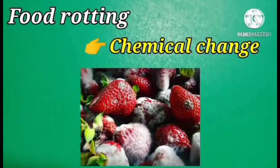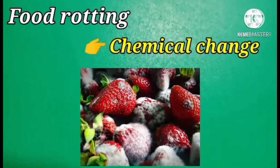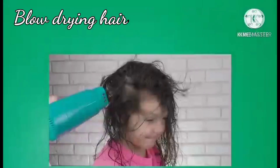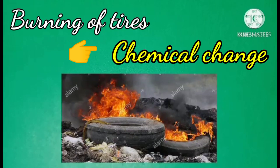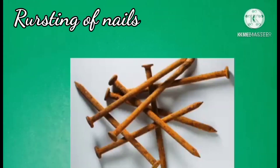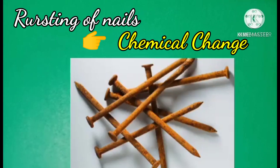This would be a chemical change because it's not reversible and involves changing the bonds of chemicals in the food. The change of color and odor is an indication of chemical change. Blow drying hair is a physical change because the dry hair is the same as wet hair. Burning of darts is also a chemical change. Nail rusting is a chemical change — if iron does rust, this is a slow chemical change since rust is an iron oxide with different properties than iron metal.